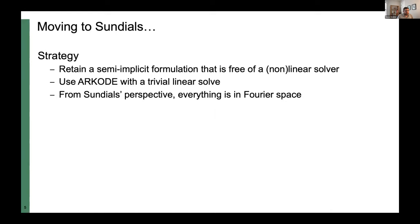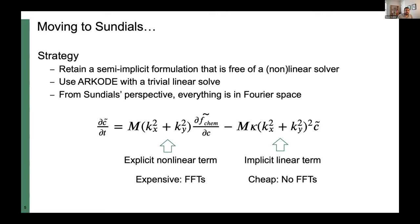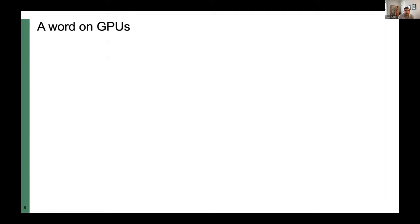About a year and a half ago, I wanted to explore moving this to Sundials, retaining a semi-implicit formulation free of a nonlinear or linear solve. The idea is to use ARKode with a trivial linear solve. From Sundials' perspective, everything is in Fourier space — Sundials doesn't know anything about the real-space representation of the PDE. We have an explicit nonlinear term requiring FFTs in the right-hand side, and a cheap implicit linear term where K vectors can be precomputed with no FFTs needed.